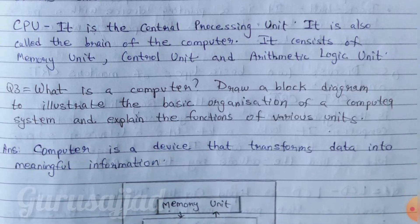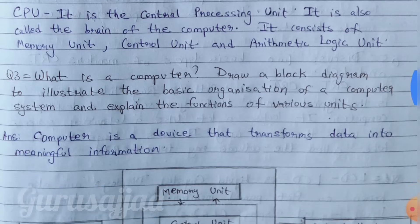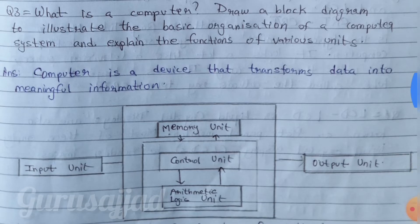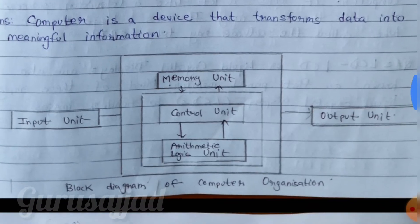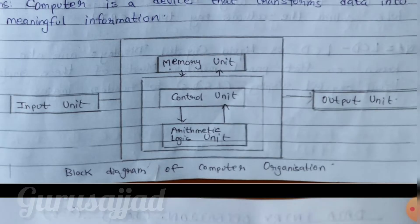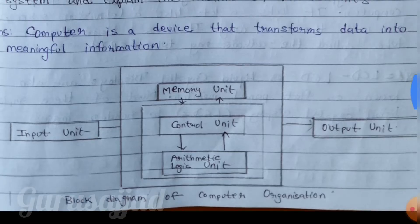Question no. 3: What is a computer? Draw a block diagram to illustrate the basic organization of a computer system and explain the functions of various units. This is very important. Answer: A computer is a device that transforms data into meaningful information. The block diagram shows the Central Processing Unit (CPU), which includes the memory unit, control unit, and arithmetic and logic unit, along with the input unit and output unit. Practice this block diagram very well.